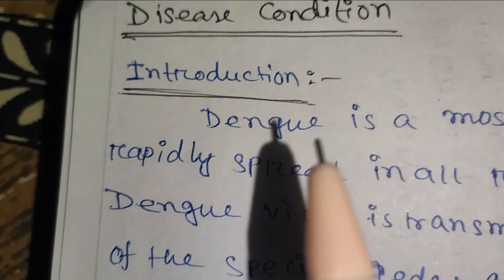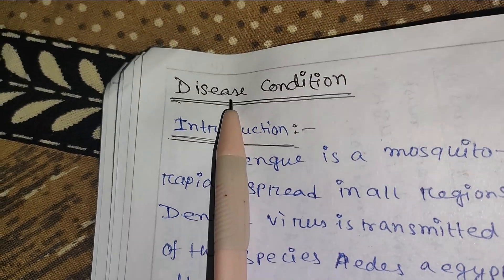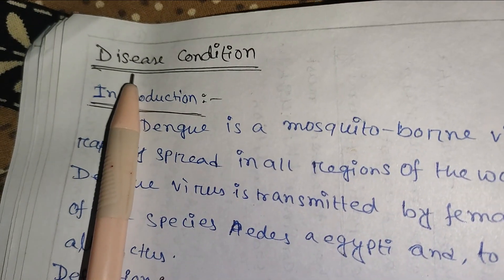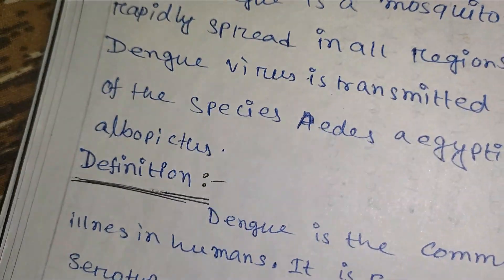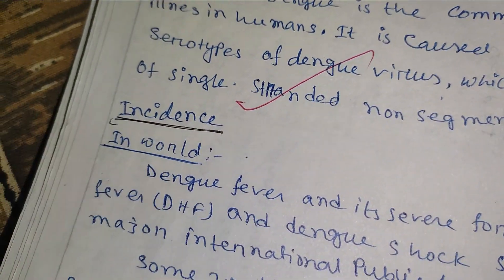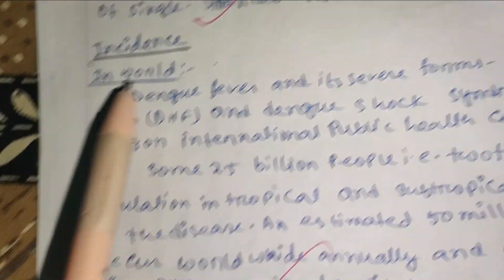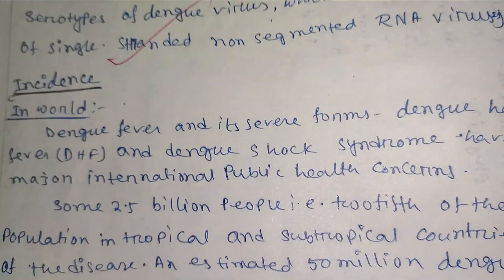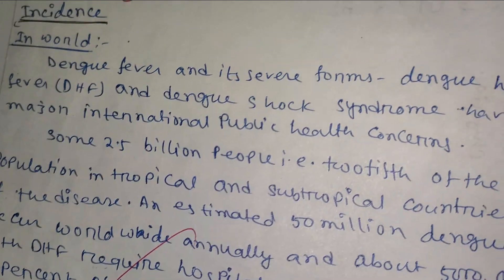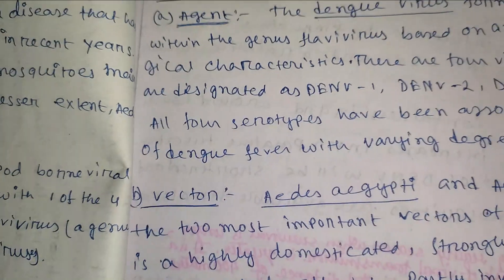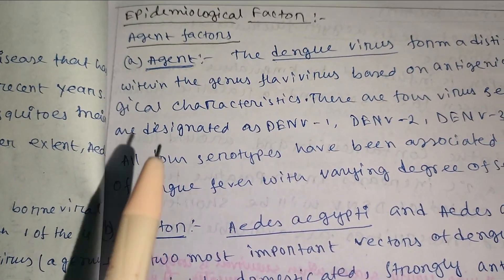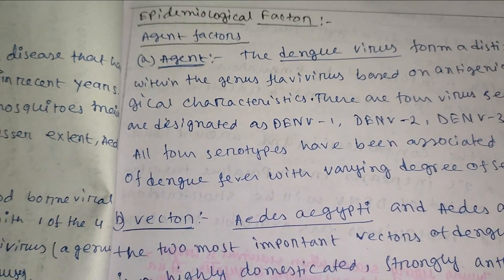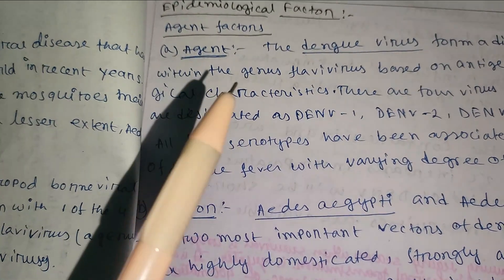The next point is disease condition. Explain the disease condition with: an introduction, definition, and incidence — both worldwide and in your country or state. If the disease is communicable, include epidemiological factors such as the agent factor, vector, and host.